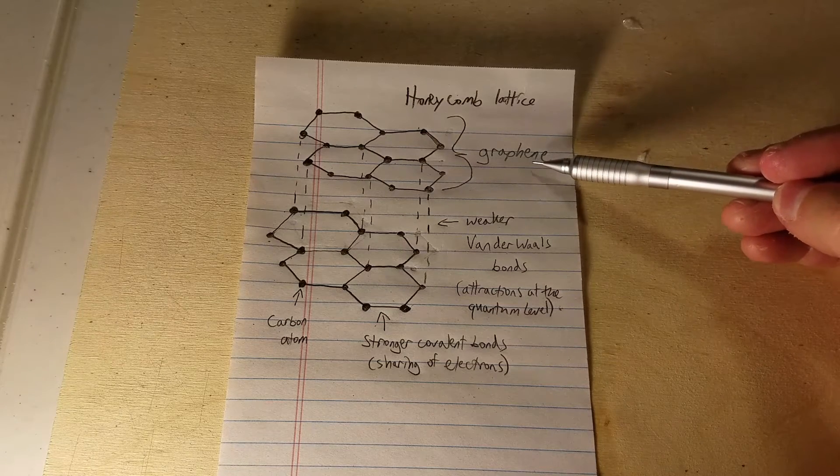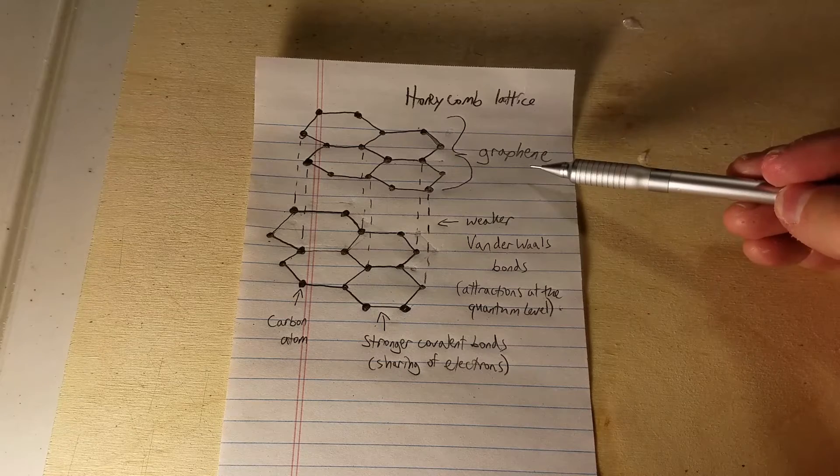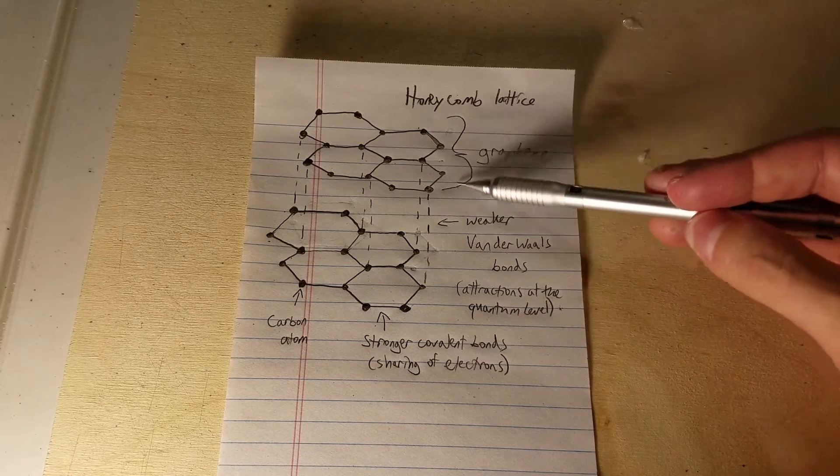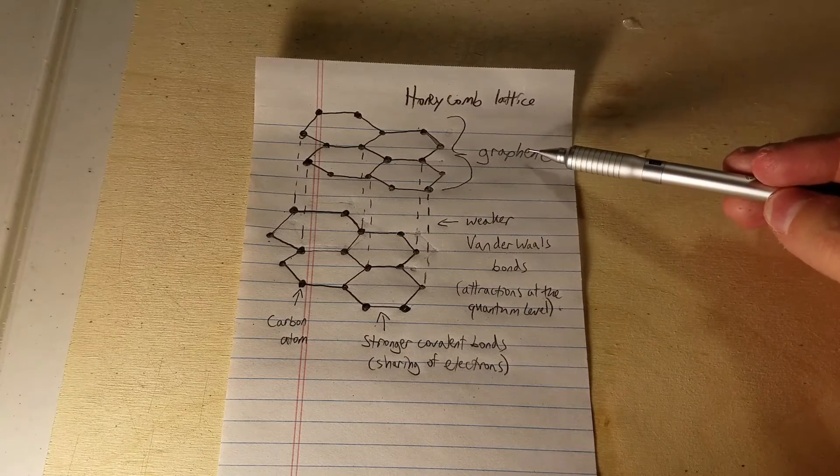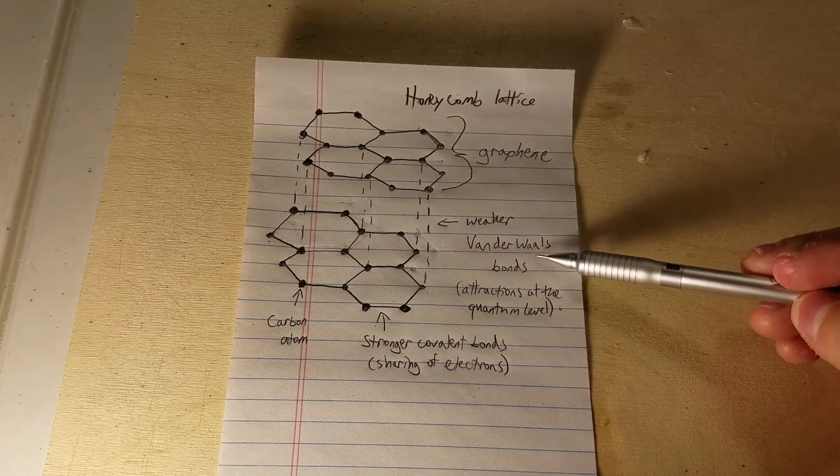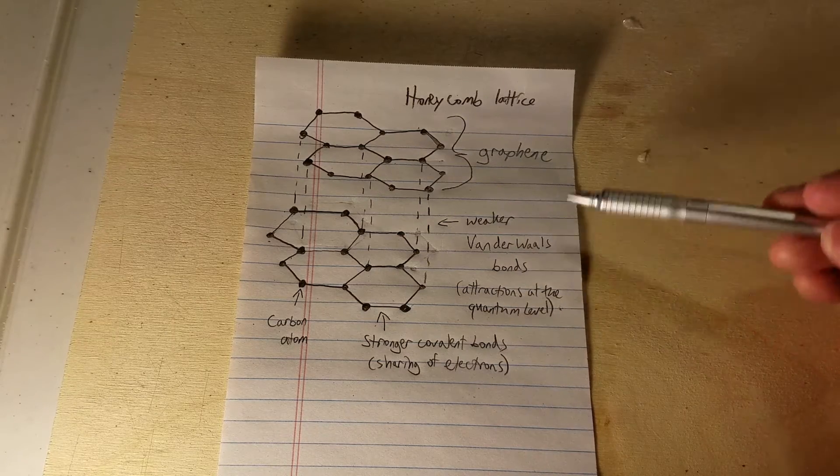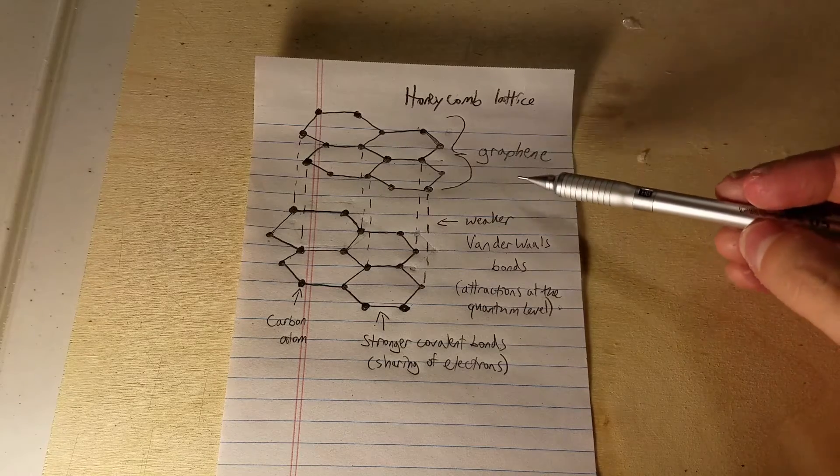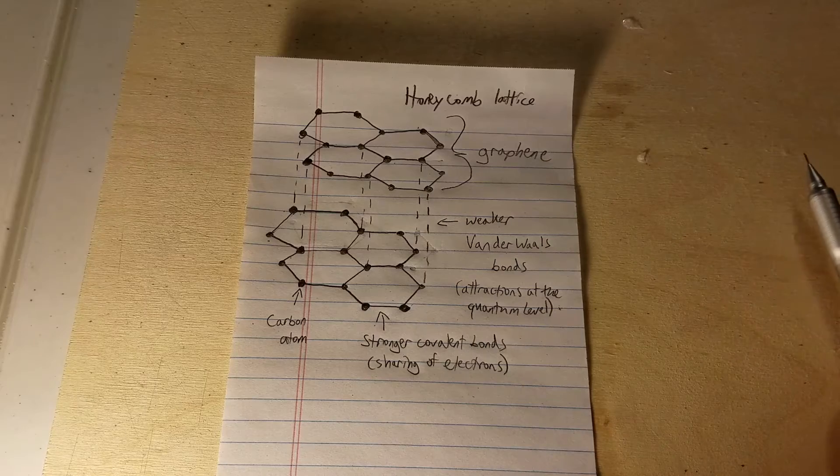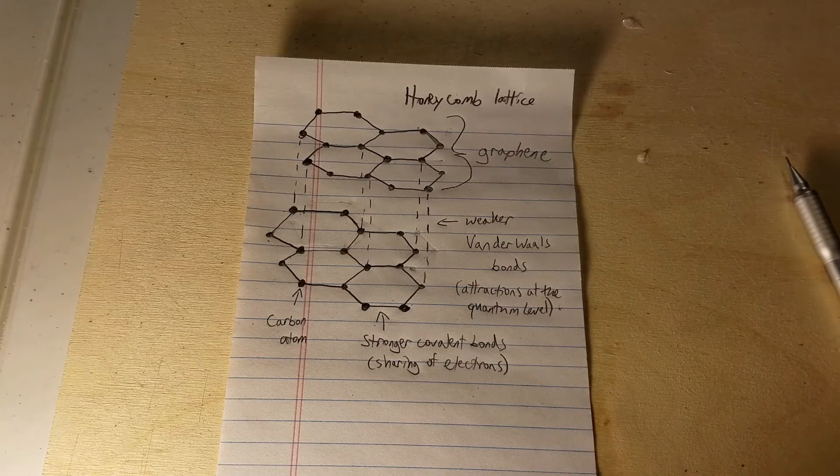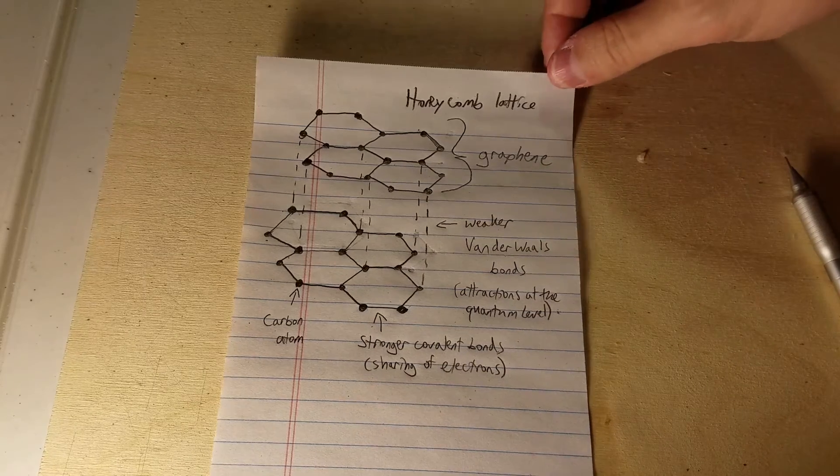If you're wondering why the heck should I care about this, it's because these layers of graphene are what are being scraped apart when you write with a pencil. And so these weaker van der Waals bonds are being broken, and graphene is essentially being grafted onto the paper from your pencil, whatever writing utensil you're using.